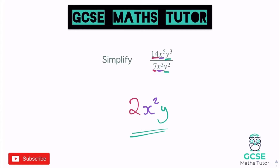We could also have a scenario where you're multiplying with numbers at the front. For example, 2x to the power of 3 multiplied by 3x to the power of 5. Treat it the same way: numbers multiply numbers giving 6, then add the powers giving x to the power of 8. So the answer is 6x to the power of 8.